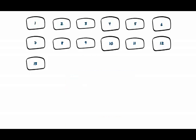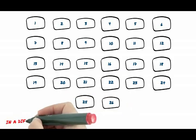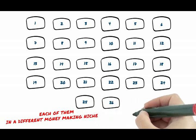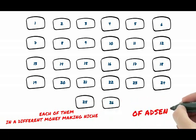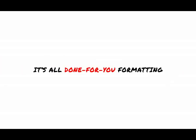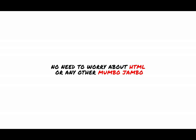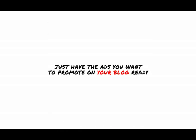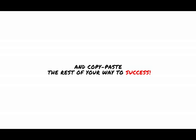There are 26 of these blogs, each of them in a different money-making niche of AdSense. Ad block placement with these blogs is a cakewalk — it's all done for you. No need to worry about HTML or any other mumbo jumbo. Just have the ads you want to promote on your blog ready and copy-paste your way to success.